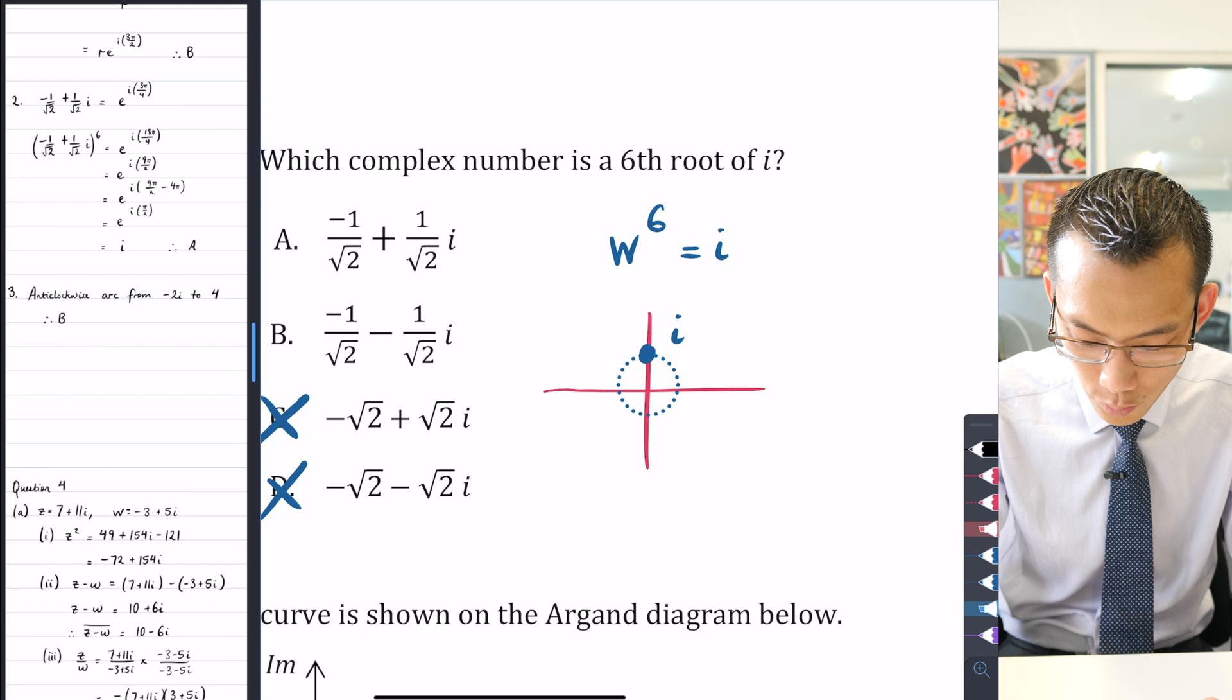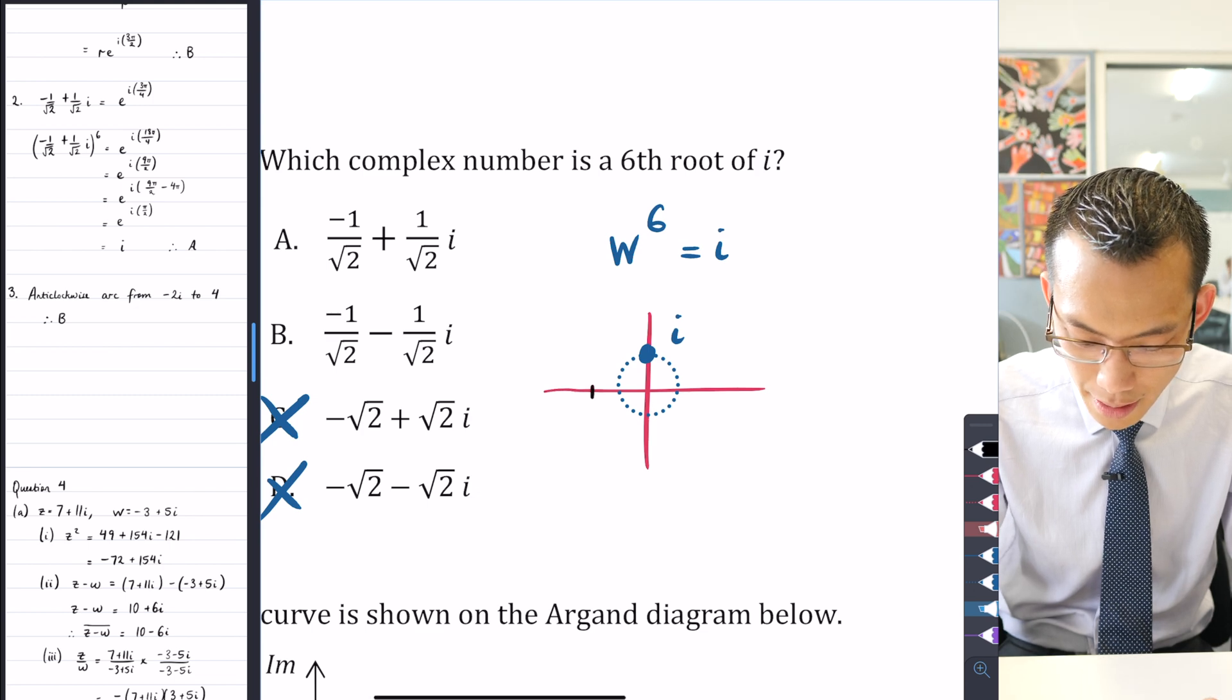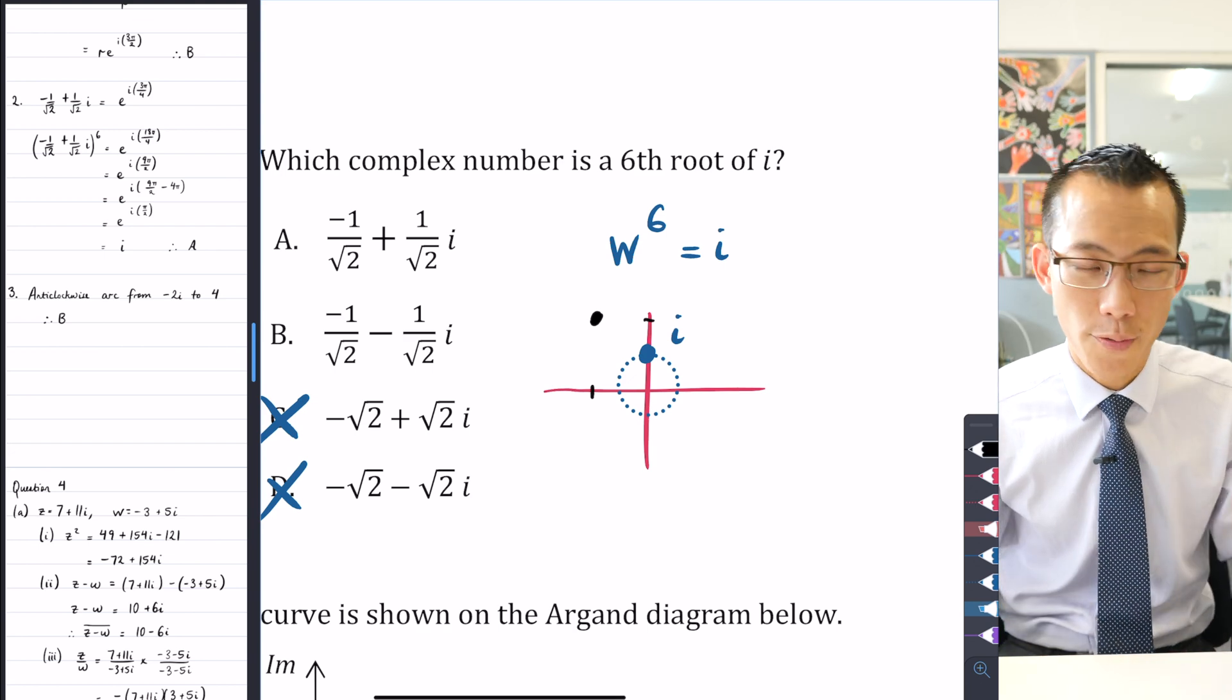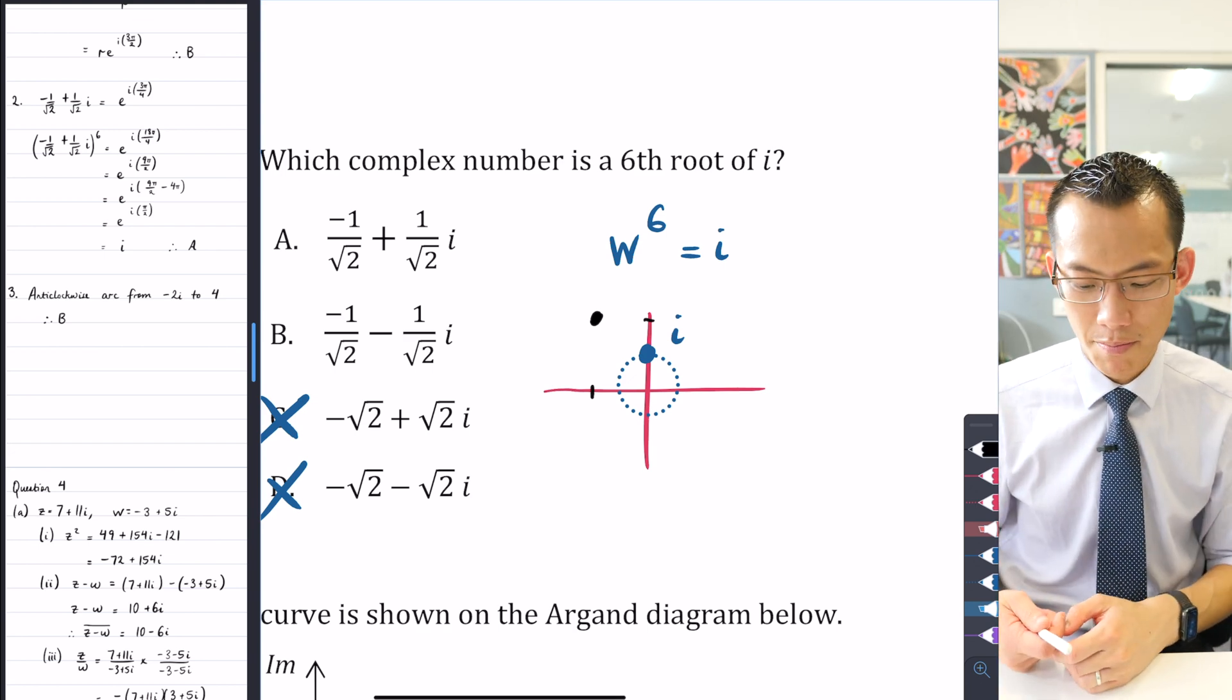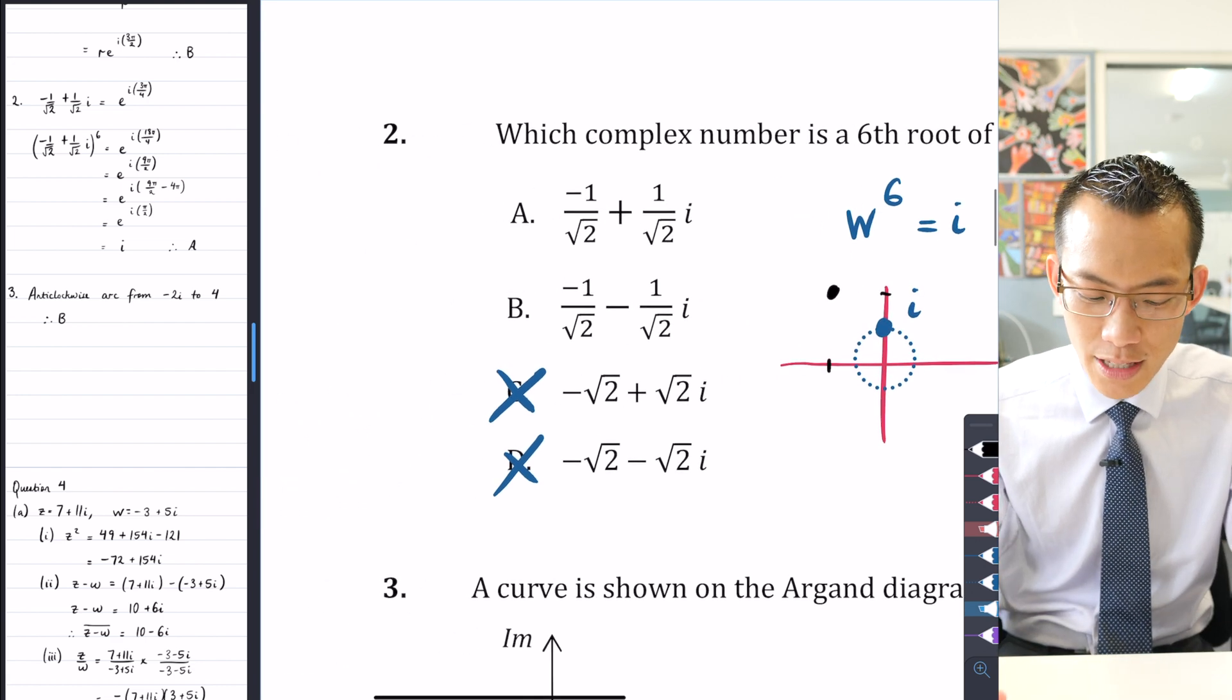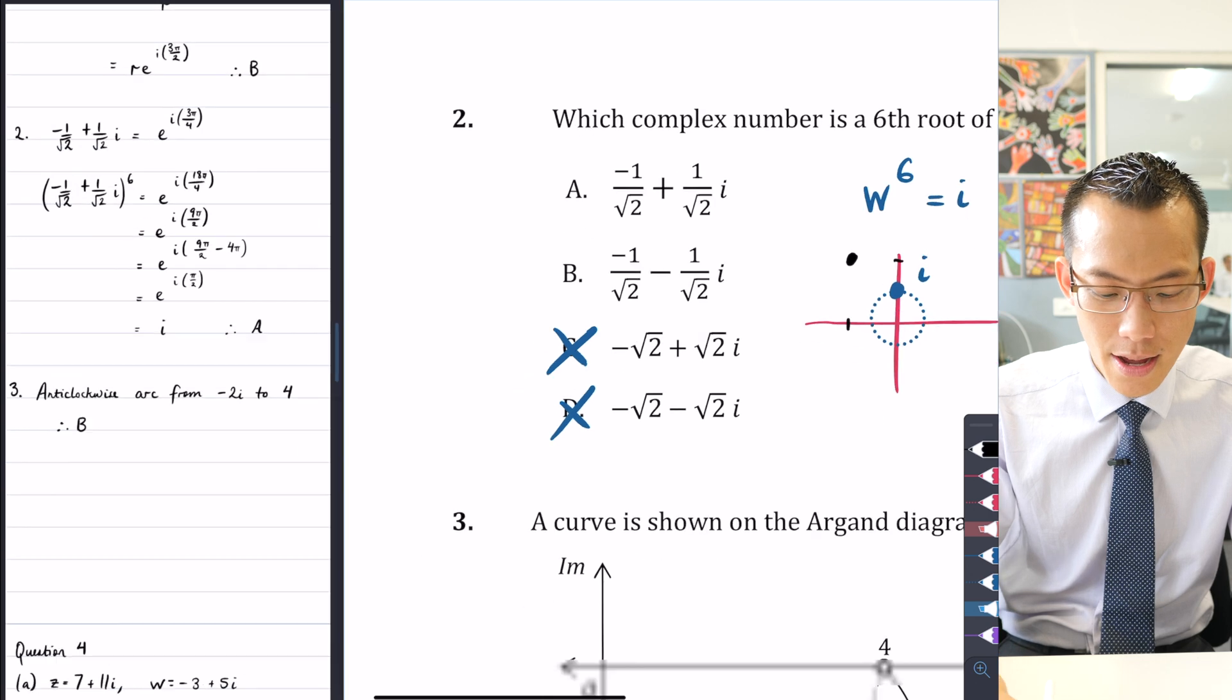It's clearly too far away. When you multiply that even by itself once, you're already away from the unit circle. You're just going to get further and further away. So that's why I've eliminated options C and D.